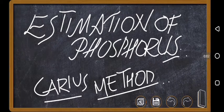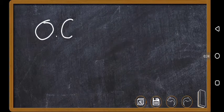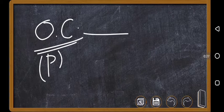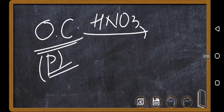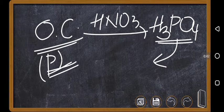We will discuss the estimation of phosphorus by the Carius method. We can calculate the percentage of phosphorus by converting it into two different compounds, both using Carius methods. First, we discuss conversion into magnesium pyrophosphate. The organic compound containing phosphorus is treated with fuming HNO₃ or concentrated HNO₃, so that all the phosphorus is completely oxidized to H₃PO₄.